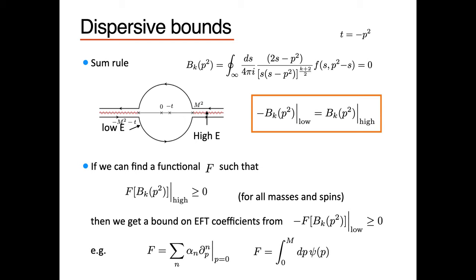Question: What part of this is unique to gravity? It looks like a UV-IR connection that could apply to any scattering amplitudes. This has been done before in non-gravitational theories. There is something special about gravity — which kind of subtractions and prefactors you can add while keeping the integrals convergent. These dispersion relations exist for any effective field theory, but there's something special about gravity that I'll mention. The connection between low-energy Wilson coefficients and high-energy partial waves can always be written down.